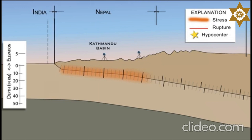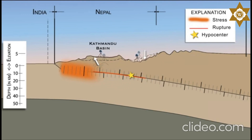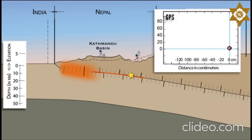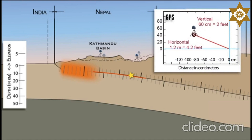During the Gorkha earthquake, that stress overcame friction and the overriding Eurasian crustal block lurched southward. Maximum displacement of 3 meters occurred on the megathrust about 20 kilometers north of Kathmandu, but the fault did not rupture to the surface. This displacement uplifted Kathmandu over 60 centimeters and moved the city 1.2 meters south towards India.